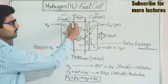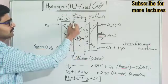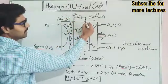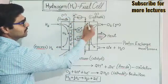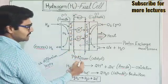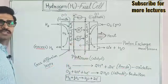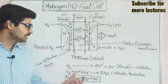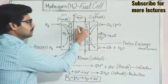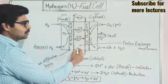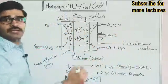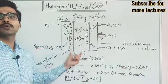Next, we have the electrodes: this electrode is the anode and this electrode is the cathode. With each electrode there is a catalyst, which is platinum — remember this, it is an important part. In the middle of the hydrogen fuel cell is the proton exchange membrane, which is the electrolytic proton exchange membrane.